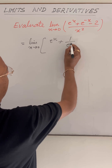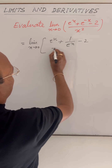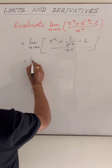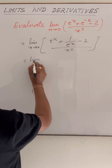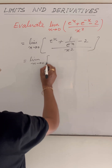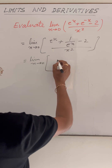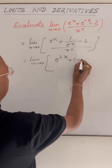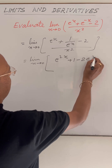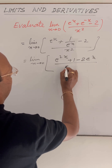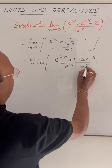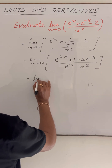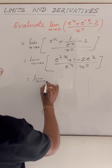This is 1 by e to the power x minus 2, divided by x squared. Let us simplify it. This will be e to the power 2x plus 1 minus 2 into e to the power x, upon e to the power x into x squared.